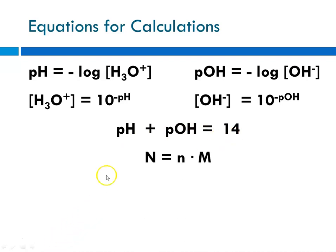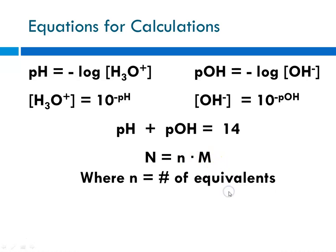Normality is defined as the number of equivalents per liter of solution. Normality is calculated using the number of equivalents times the molarity, where n is the number of equivalents and M is the molarity in moles per liter of a solution.